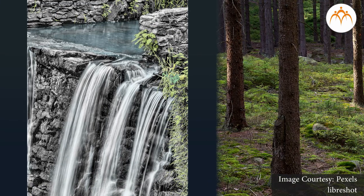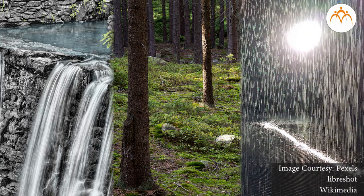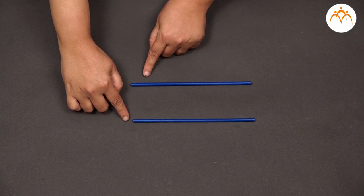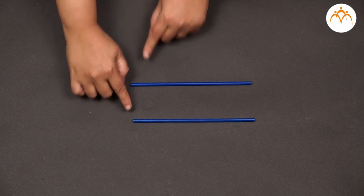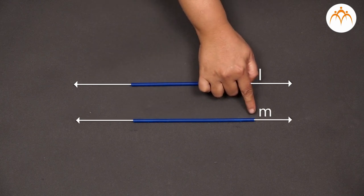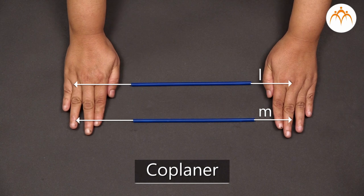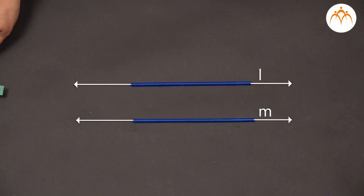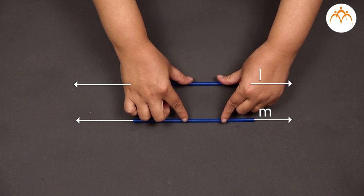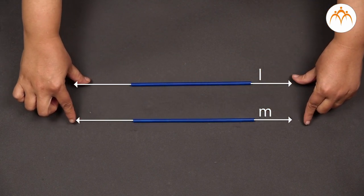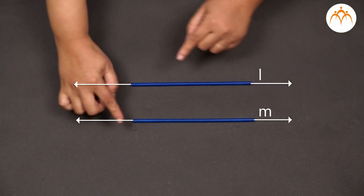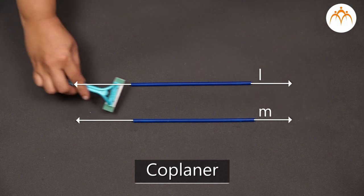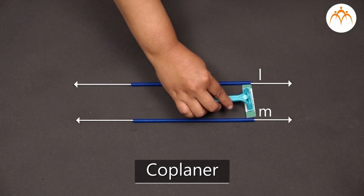Let us look at similar examples of parallel lines we find in nature. Let us understand the concept of parallel lines with the help of two straws. These two straws represent line L and line M. They lie in the same plane, and the distance between them is equal. That means, even if we extend line L and line M in both directions, they will never meet each other. Such lines, which lie in the same plane — hence called coplanar — and where the distance between them is equal, are called parallel lines.